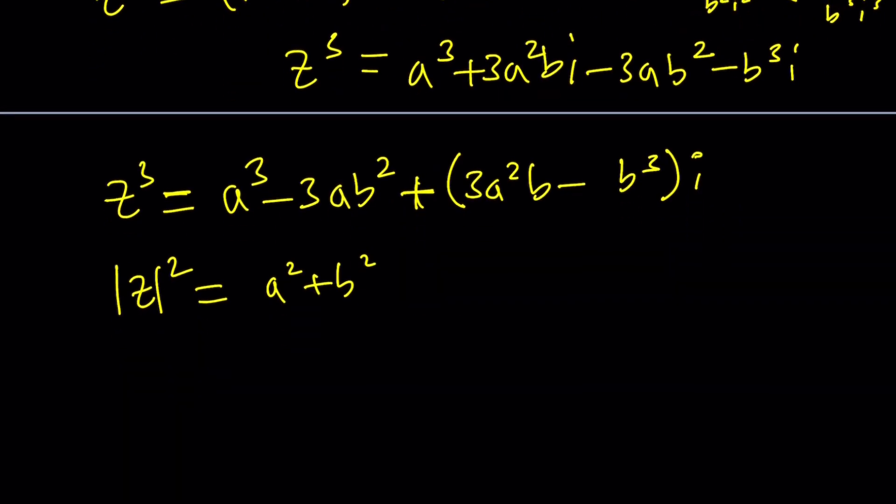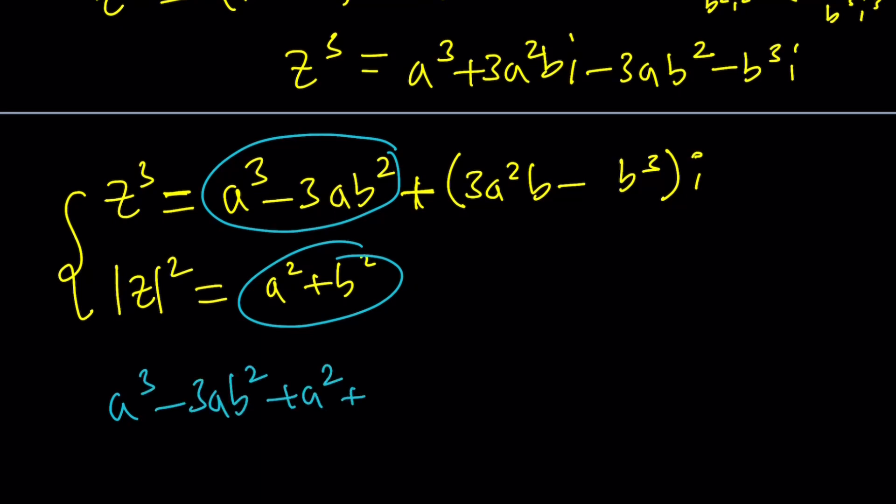Now, we want this sum to be two, so we're going to add them up and set it equal to two. Let's do it. How do we add two complex numbers? We are supposed to add the real parts first, right? So that gives us A cubed minus 3 A B squared plus A squared plus B squared. And then we add the imaginary parts, but the second number is real. It has no imaginary parts, so it's zero. We're just going to add it to zero, so it's going to be the same thing. Make sense? So this sum is equal to two. Awesome.